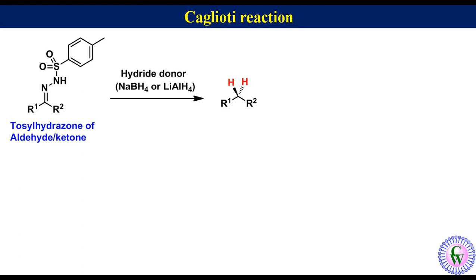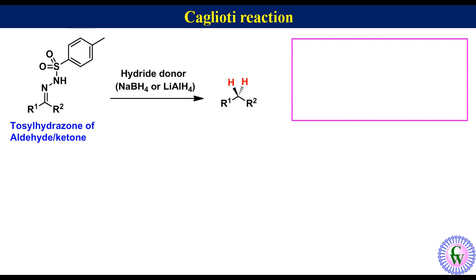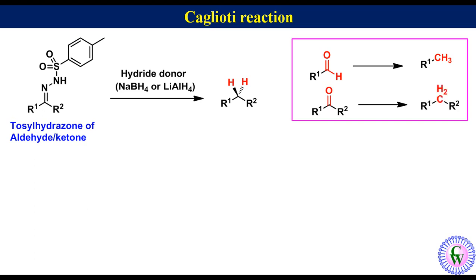The overall changes in this reaction are removal of the tosylhydrazide group and addition of two hydrogen atoms to the carbons bearing R1 and R2. Thus, using this reaction we can convert aldehyde to CH3 and a keto group to CH2, just like in the case of Wolff-Kishner reduction.